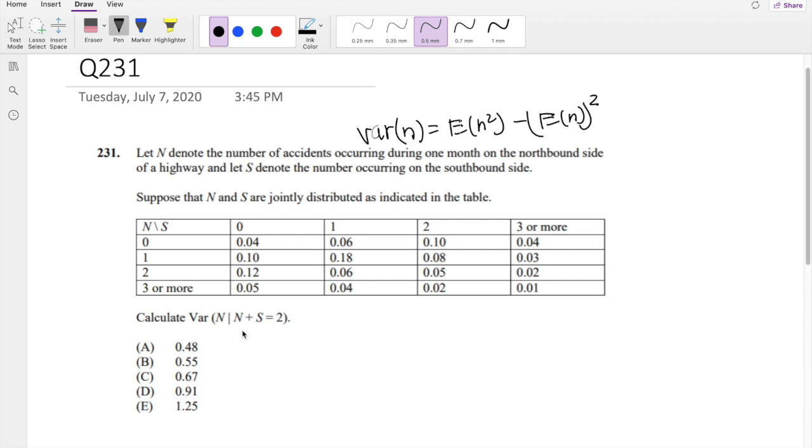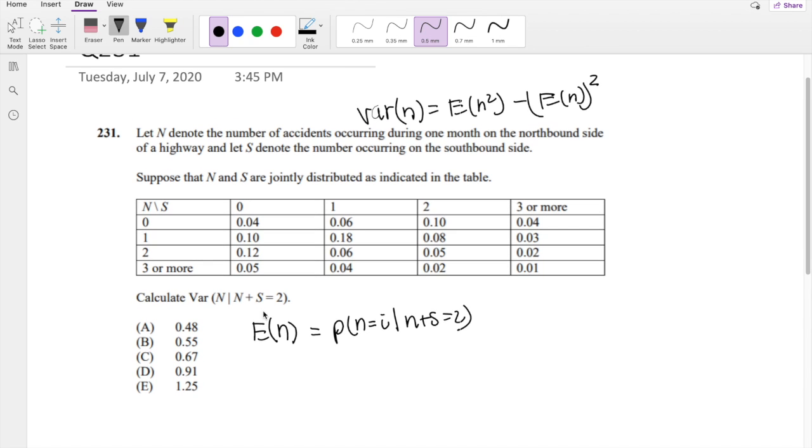Alright, but then the trick here is that there is a condition. Let's say we're trying to solve for expectation of n. This is equal to the probability of n equals i given that n plus s equals 2. So let's find where n plus s equals 2 first.